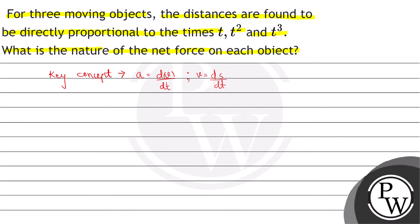Firstly, we have to look at the first case. In the first case, the distance is directly proportional to the time. So s = kt, where k is the proportionality constant. Now we will calculate v. It will become ds over dt.